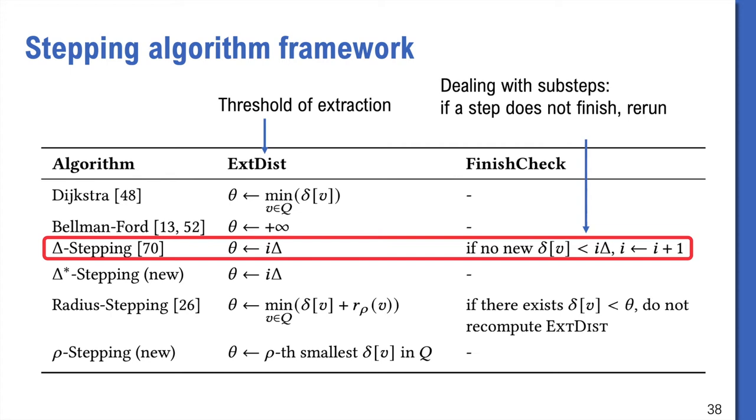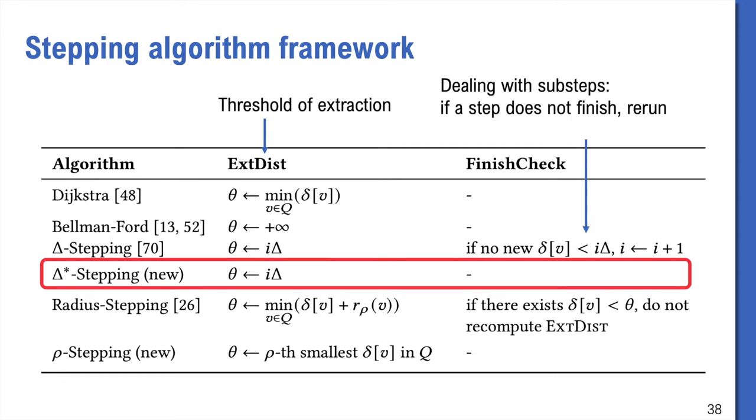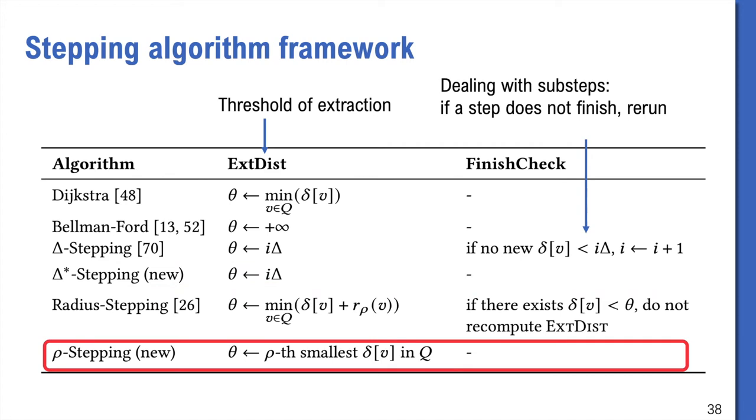And we have two new algorithms. Delta*-stepping is our new variant of delta-stepping, by removing the finished check. We can avoid sub-steps and make it efficient both in theory and practice. Rho-stepping simply uses the rho closest distance, so the idea is pretty simple. Our two new algorithms achieve both new theoretically bounds and efficient implementations.